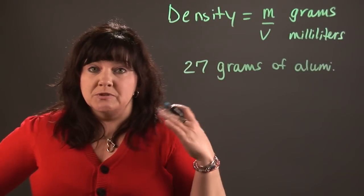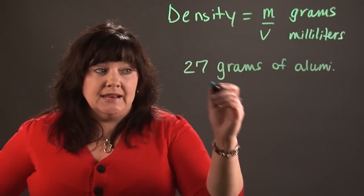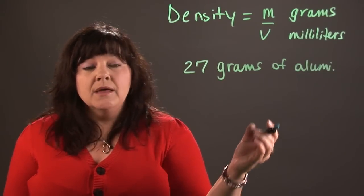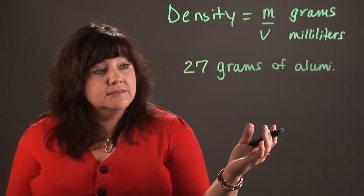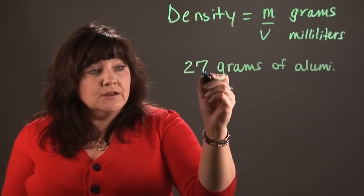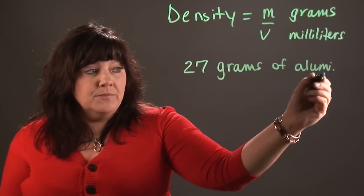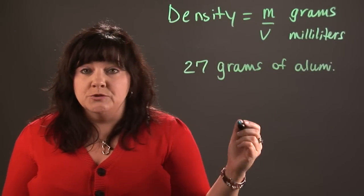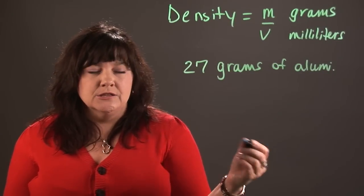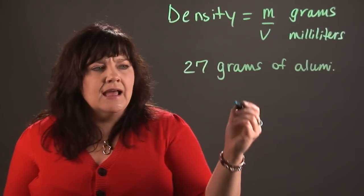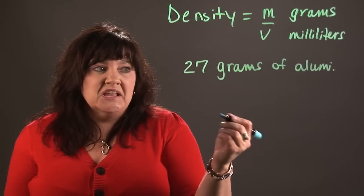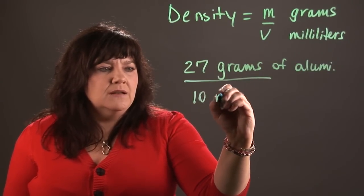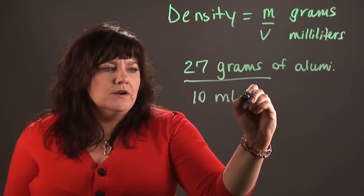One of the ways people typically calculate how much volume something takes up is they would drop it in a graduated cylinder. So I could take my piece of aluminum foil, wad it up into a ball, drop it into a graduated cylinder, and let's say that it displaced 10 milliliters of water.